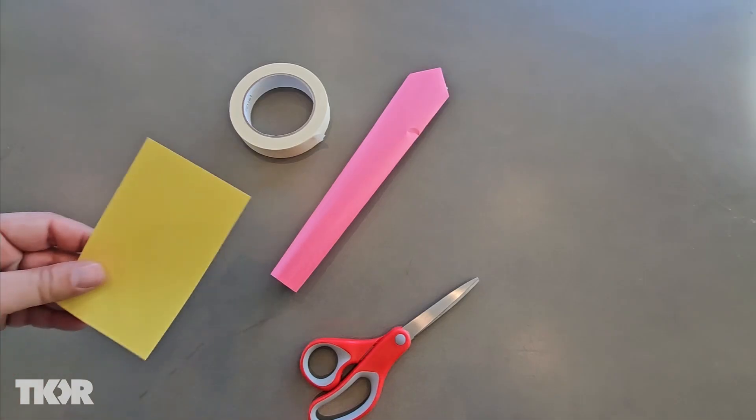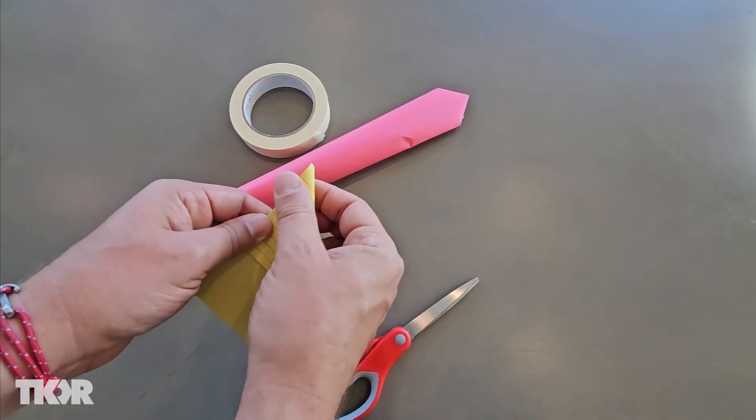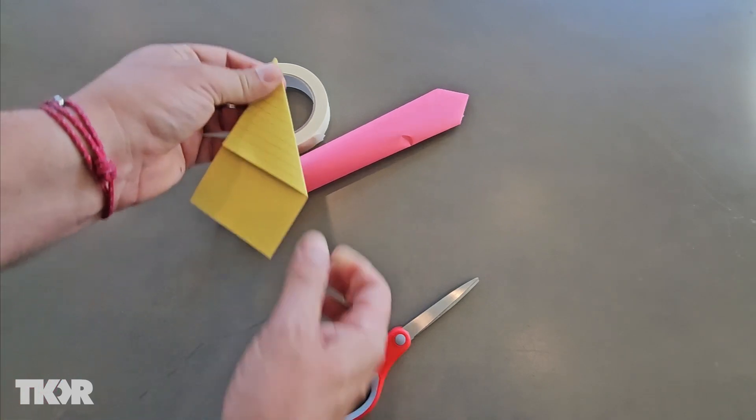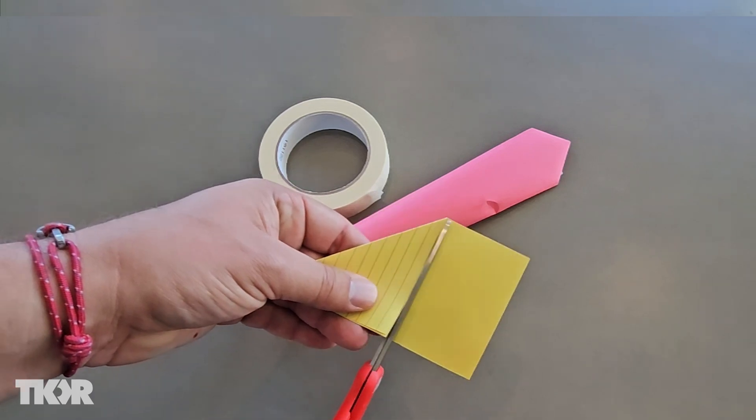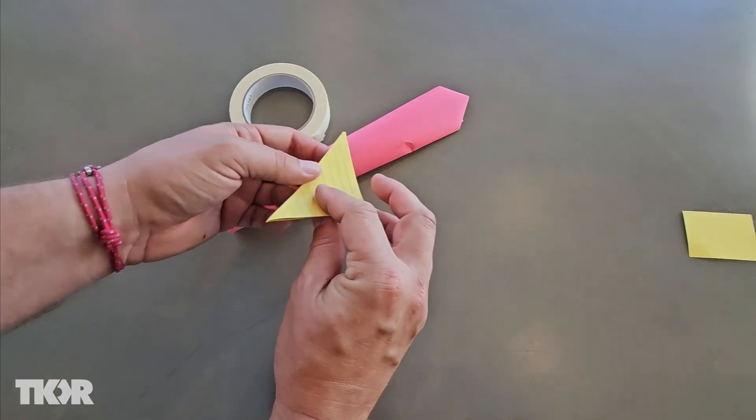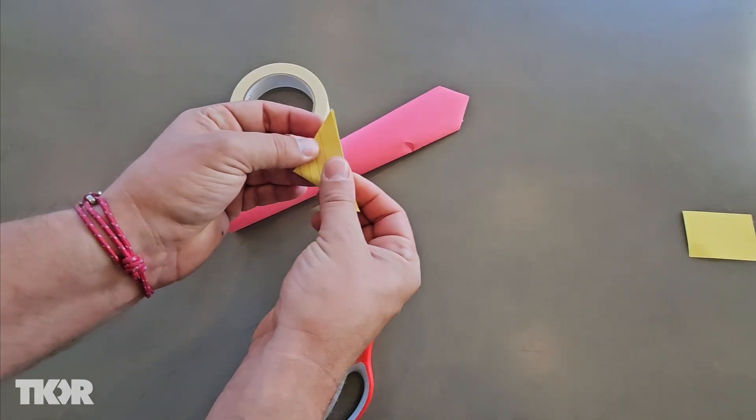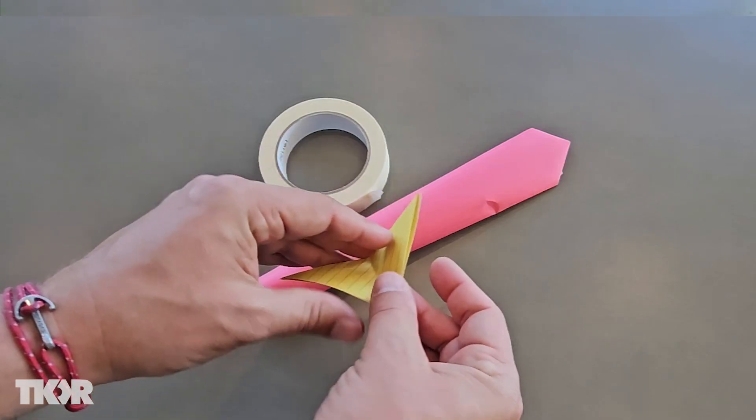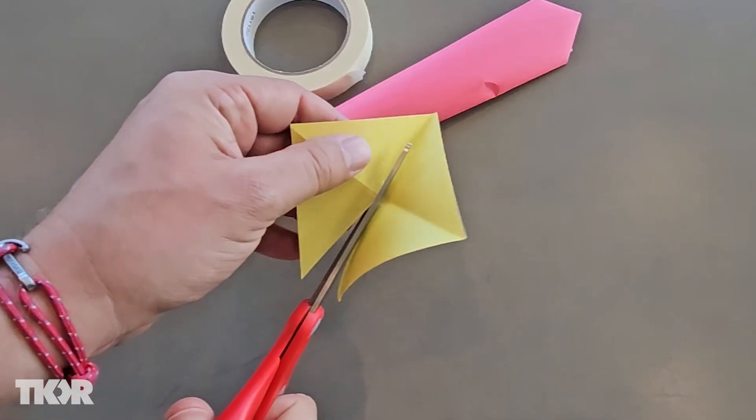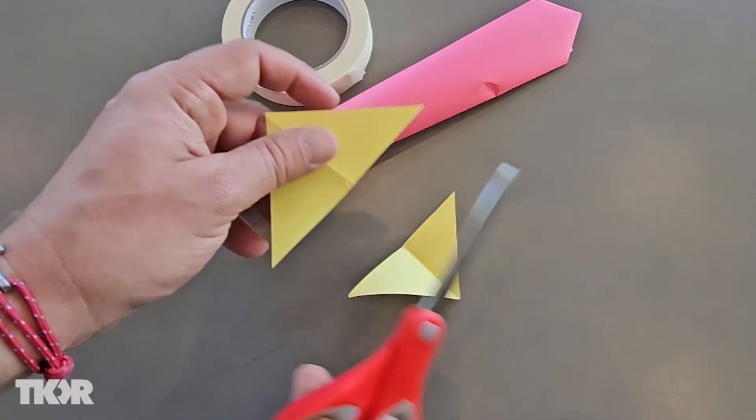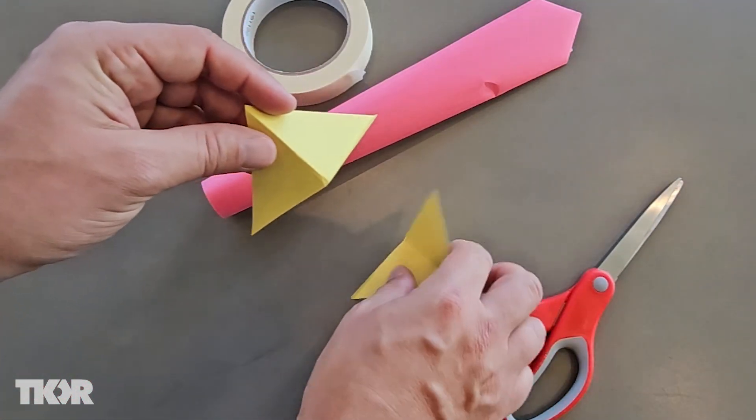It's time to make tail fins. Take an index card or construction paper and fold a triangle. Cut off any excess paper. Fold that triangle in half to make a smaller triangle. When you open it up, you should have a square with a folded cross on it. Cut down one of those folds. You've now created two tail fins for your rocket.